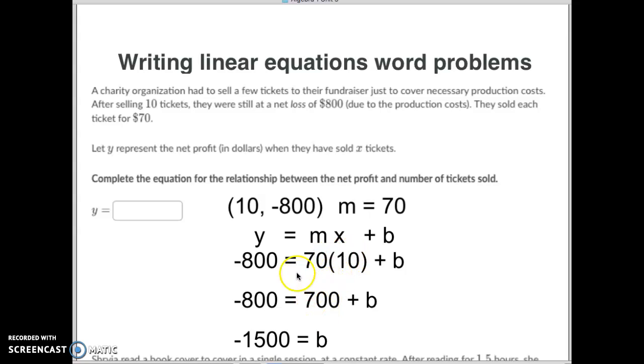Multiply these two together. We get 700 right there. We then subtract 700 from both sides and we get b equals the starting point of negative 1500. So our equation is y equals 70x minus 1500.